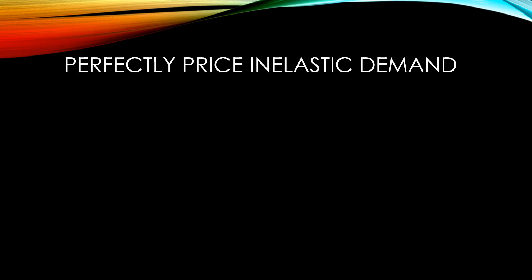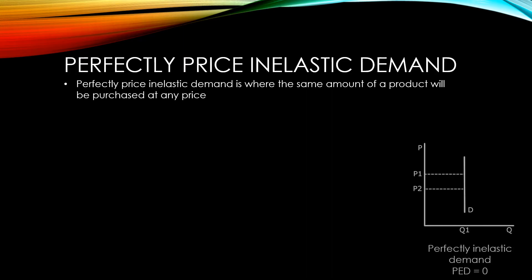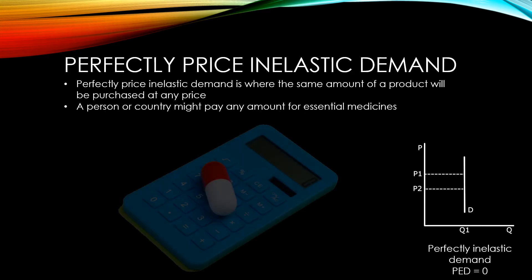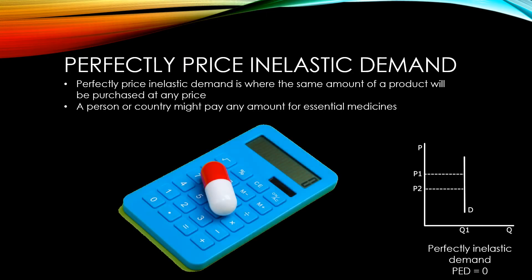Perfectly price inelastic demand is where the same amount of a product will be purchased at any price. Much like perfectly elastic demand, this is not a very realistic situation. However, we might see something similar with the demand for essential medicines that might save a person's life — they would be willing to pay whatever price is needed to acquire them, but there is no need to acquire any more than the amount they need.